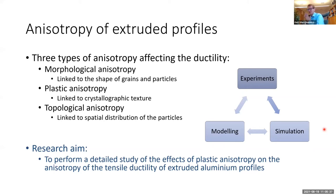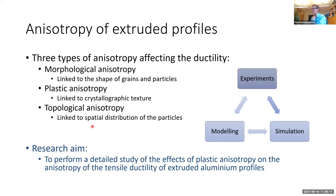There are essentially three types of anisotropy that affect the ductility of extruded profiles. First, morphological anisotropy linked to the shape of grains and constituent particles — in the fibrous grain structure the grains are very flat. Second, plastic anisotropy linked to crystallographic texture, which manifests as anisotropy in yield strength and plastic flow. Third, topological anisotropy linked to the spatial distribution of constituent particles, which line up along the extrusion direction forming stringers — a clustering that also leads to anisotropy.